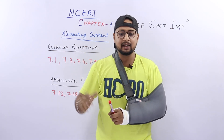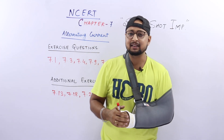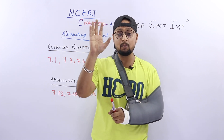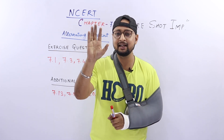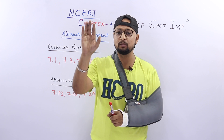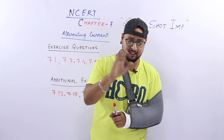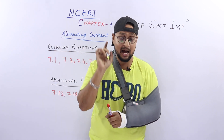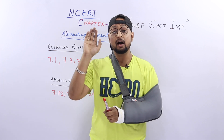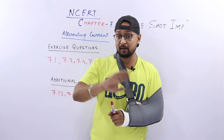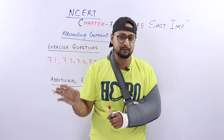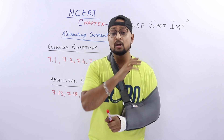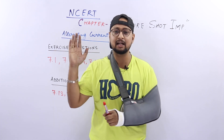यार, जब तुम alternating current की बात करते हो ना, तो यह बात लेके जाओ कि इस बार numerical के chances हर बार की तरह जादा हैं. यहां से numerical आए हैं — current electricity के बाद, alternating current एक ऐसा section है जहां से numerical आने के chances बहुत जादा होते हैं.